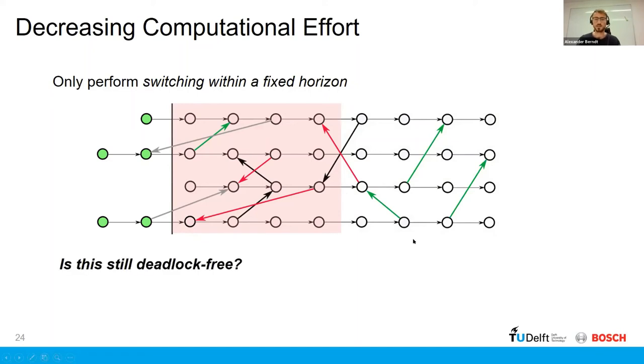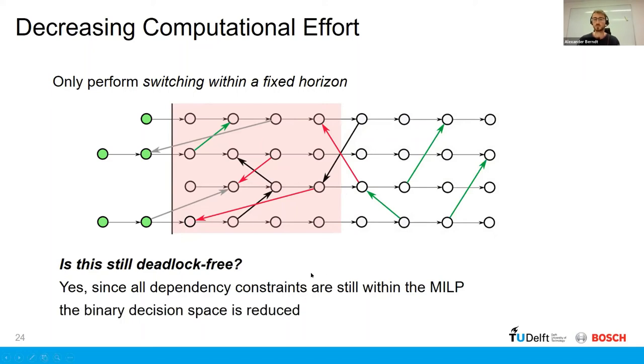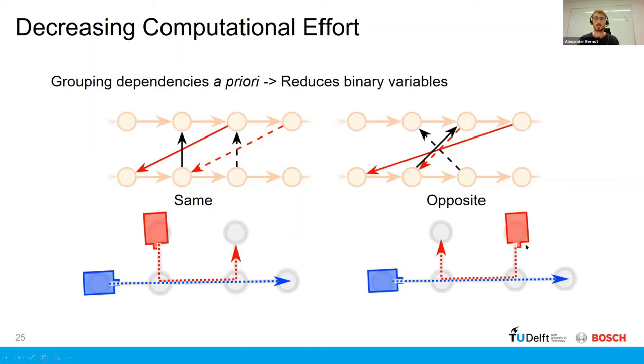The question is, will this still result in deadlock-free solutions? And the answer is yes, because we're still considering all the constraints of the original optimization problem. What we're just doing is that we're reducing the number of binary variables, which makes the optimization solver find a solution much faster.